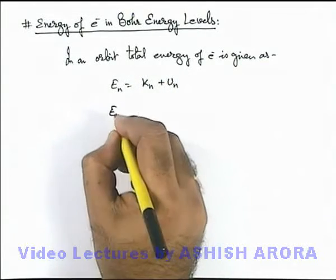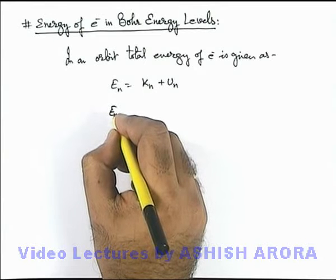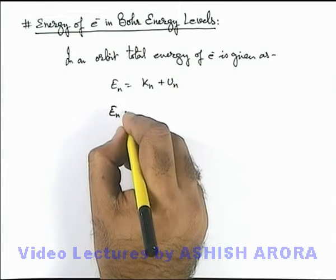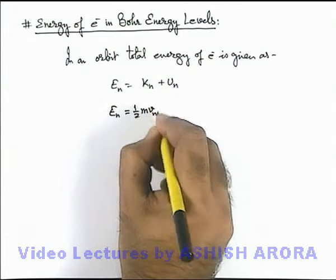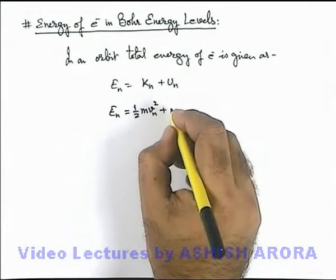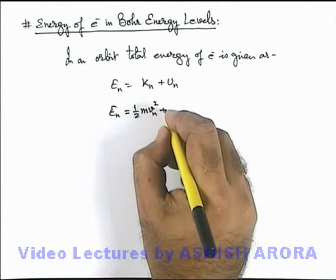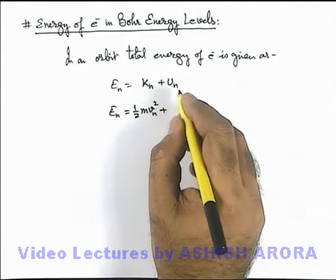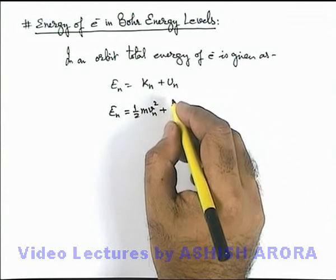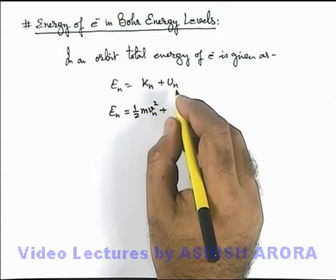If we simply calculate the kinetic energy of electrons in nth orbit, then it can be directly given as half m v_n square. And potential energy is purely the electrostatic potential energy of electron because gravitational potential energy here will be negligible because of negligible mass in electron.